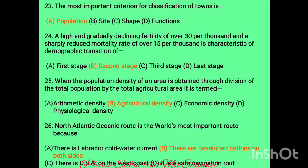Question twenty-three: the most important criterion for classification of a town is population — considering size, shape, and function, population is the answer. Question twenty-four: high and gradually declining fertility over 30 per thousand and surplus but reduced mortality rate over 15 per thousand is characteristic of the second stage of demographic transition.